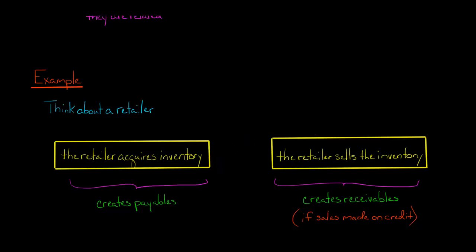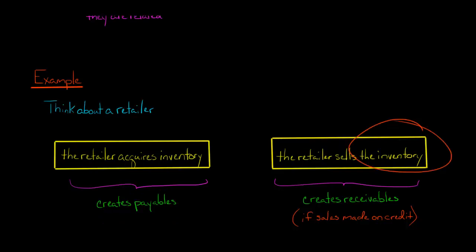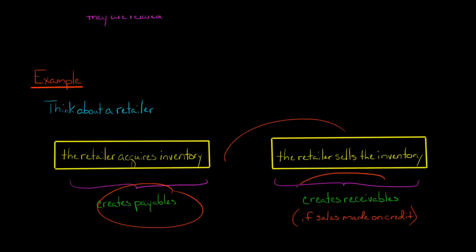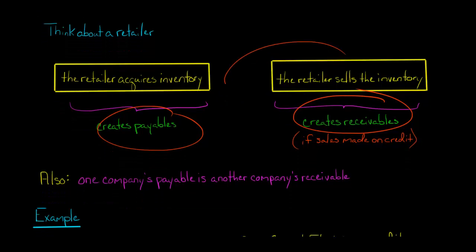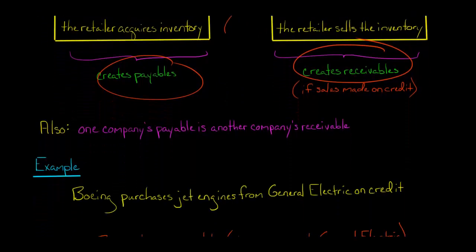That is going to create a receivable. So in short, the retailer acquires the inventory and thus generates payables, and then they turn around and sell the inventory, which creates receivables. So you generate payables by acquiring inventory, then sell the inventory, and you get receivables and hope to collect that at some point in the future.